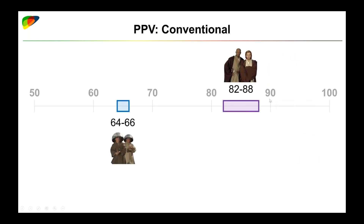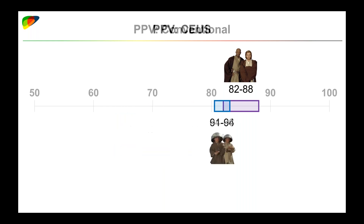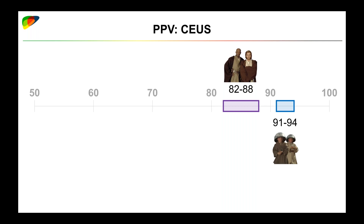For positive predictive value using conventional criteria, senior attendings again outperformed their junior colleagues — but that difference was eliminated once the junior colleagues applied CUS LIRADS criteria. So there's at least some evidence that using LIRADS in clinical practice helps more junior or less experienced users achieve similar performance to those with much greater experience in liver imaging.